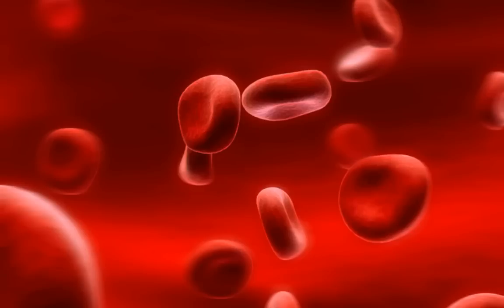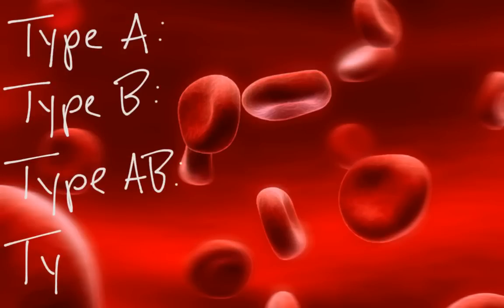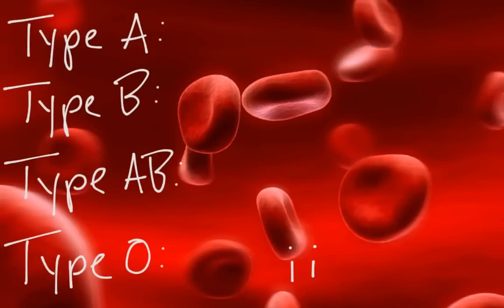There's another way you'll sometimes see these genotypes written — using the letter I instead of A, B, and O. The four phenotypes are still type A, B, AB, and O. For type O, since it is recessive, we use two lowercase i's. For the A and B alleles, we use a capital I with a superscript: capital I-superscript-A for an A allele, and capital I-superscript-B for a B allele. The advantage of this notation is it's very easy to see that type O is recessive (lowercase i) and A or B is dominant (capital I).